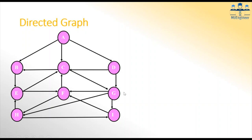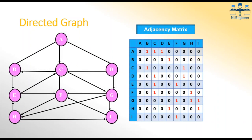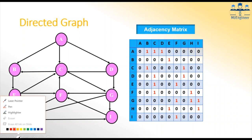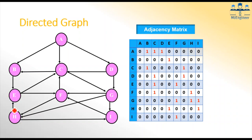First, if we have a given graph — say, for example, a directed graph — to perform traversal I will first have to create an adjacency matrix for the graph. The adjacency matrix for it can be created like this. Here I have nine nodes, so for each of them I am creating nine rows and nine columns — a two-dimensional matrix of nine by nine.